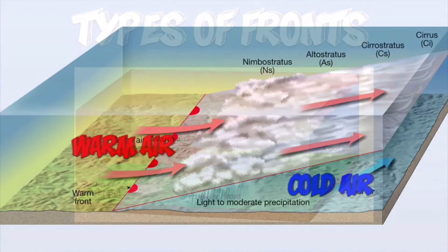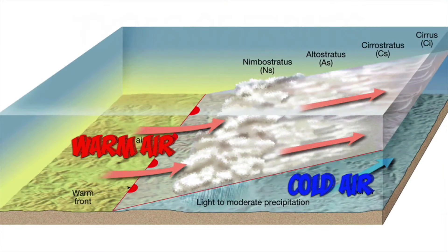Here's warm air on the left and cold air on the right. The cold air was already in the area, and warm air gradually moves in. Instead of heavy rains and severe thunderstorms — which are associated with cold fronts — you get very light to moderate precipitation.